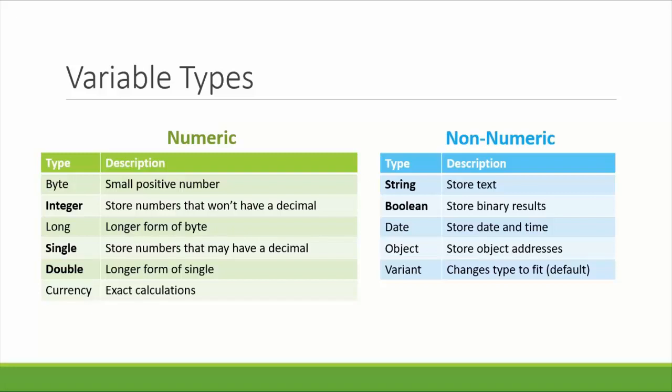Let's look at the numeric data types. Bytes are rarely used because they can only store small and positive numbers. You might occasionally see a Long variable type because it can store much larger positive numbers, but most often you will see numbers fall into either Integer, Single, or Double. Integer is, as it sounds, capable of storing whole number values. Single and Double both store numbers that might have negative or decimal values, so these are the two you will see most often. Currency ensures you will be using exact numbers for calculation instead of risking rounded numbers, so it's a good variable type to use for exact monetary calculations.